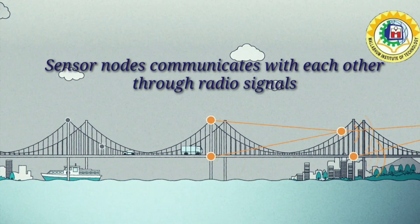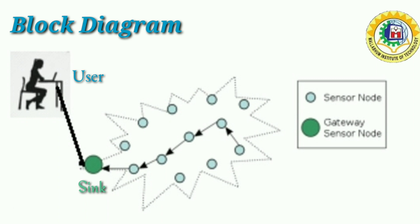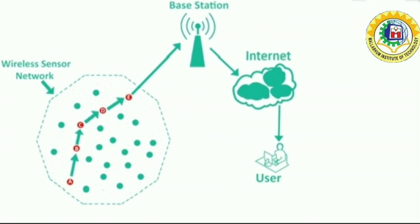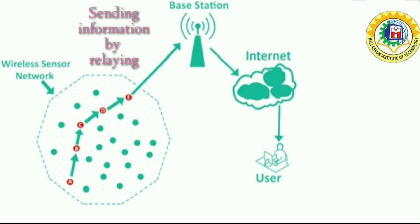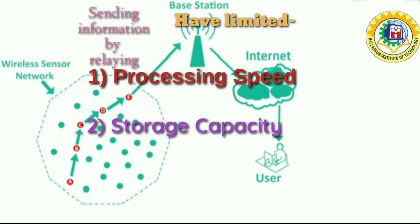The sensor nodes can communicate among themselves using radio signals. This is a block diagram of a wireless sensor network. This network consists of 100 to 1000 tiny sensor nodes, connected with each other and finally to a base station, also known as sink. They have limited processing speed, storage capacity and communication bandwidth.